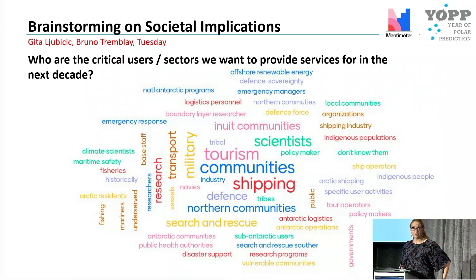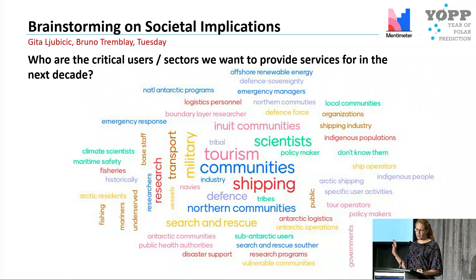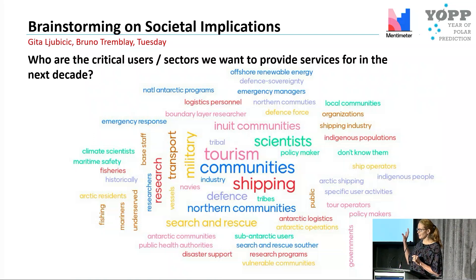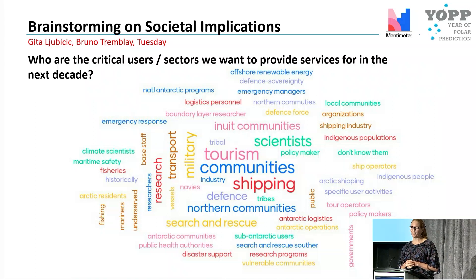In the Tuesday session, Bruno and I facilitated a discussion focused on who are the critical users or sectors we're trying to provide services for. There were a lot of responses, with the size corresponding to how many people input each response. Communities came out as a really primary one, with many related variants — northern communities, indigenous communities, specifically Inuit communities — which is wonderful to see, though tailoring services to meet those particular user needs is a challenge.